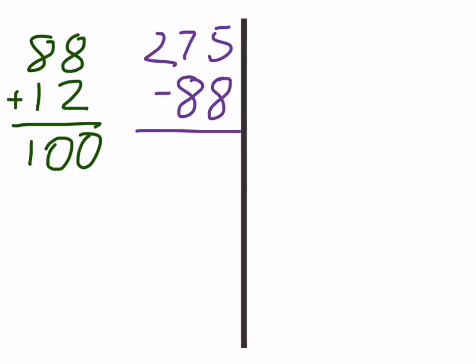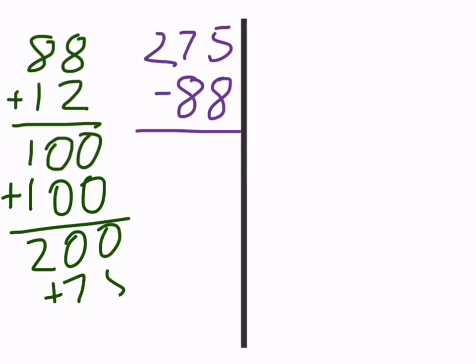If you can, you could go plus 175 and get all the way there. Or if you need to break it down into smaller steps, that's also okay. So you could go to 200, then to 275. And now you're there.